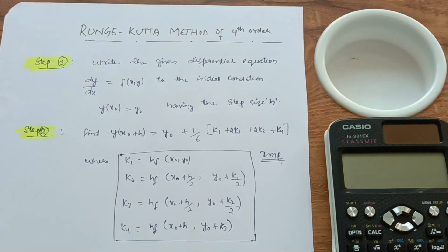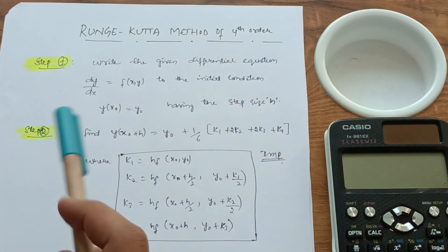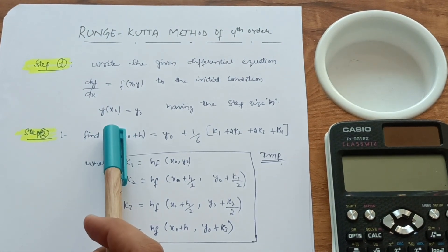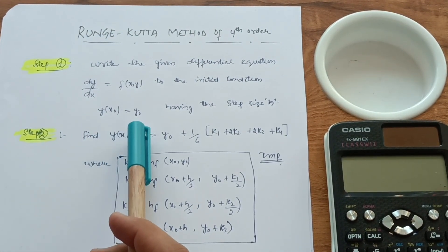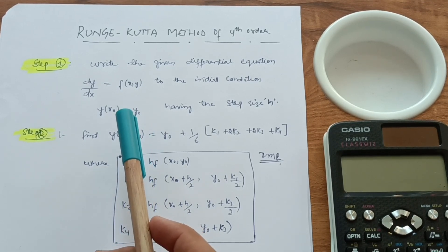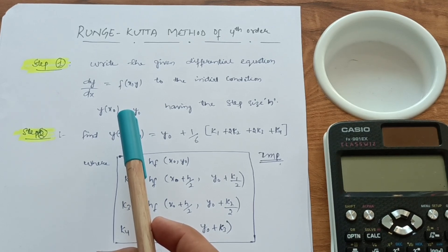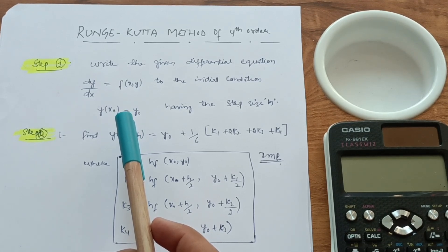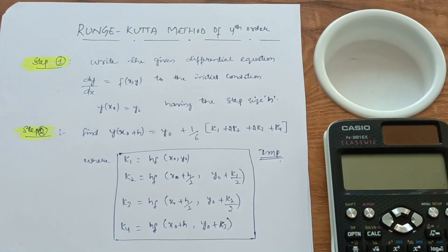Hello friends, welcome back again. Today I have another problem solving video for second semester students from the 2022 scheme. I have completed all mathematics series — passing strategies and passing hacks with the most important questions for the VTU examination. Links are in the description box. Before proceeding, let me tell you what the Runge-Kutta method of fourth order means, and then we will solve some examples.